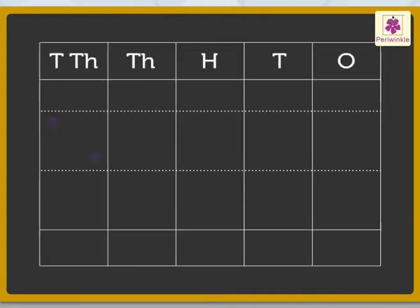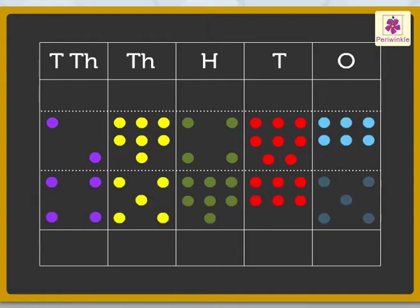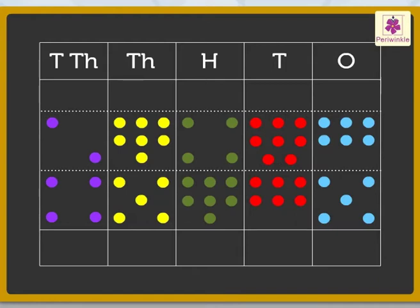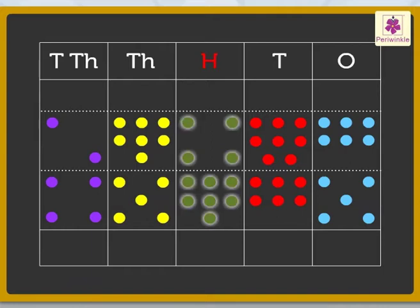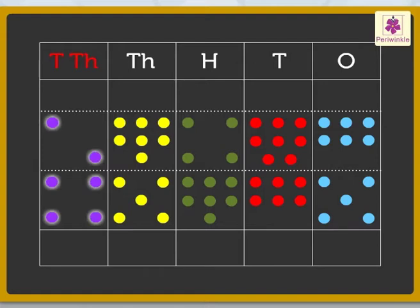So the numbers 27,486 and 45,765 will be represented like this with dots. Now let us add the dots in the ones column first, then the dots in the tens column, then in the hundreds column, then the thousands, and lastly the ten thousands column.